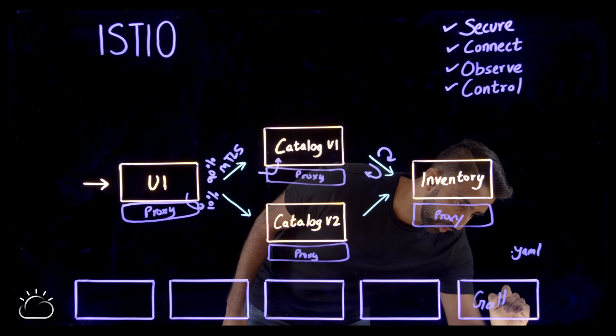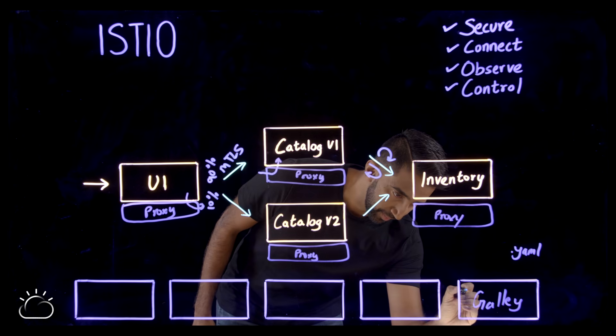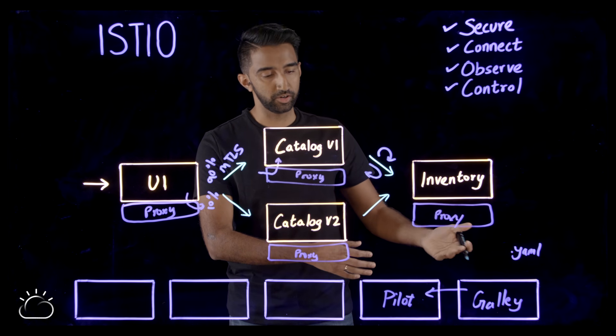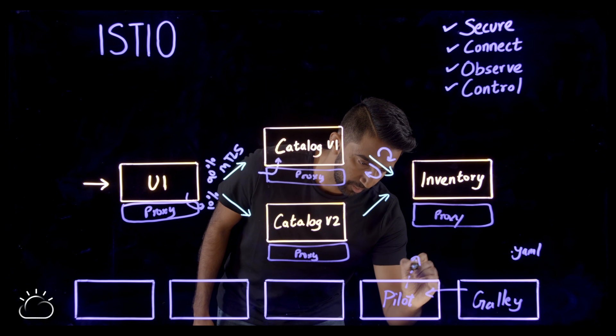The Istio galley component will receive that YAML, validate it and then hand it over to Istio pilot. Pilot will convert that configuration to Envoy configuration and distribute it to each one of the proxies.